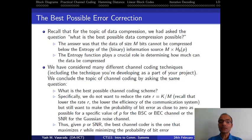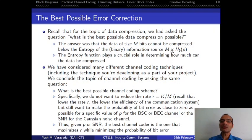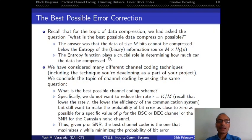Specifically, for a binary source generating m bits, if that source's entropy is hB(p), then at most you can compress those m bits down to m times hB(p) — you can't do anything better than that. Similarly, let's ask what is the best possible channel coding that anybody can ever come up with.